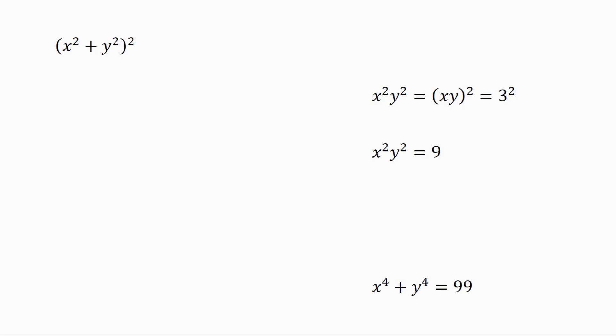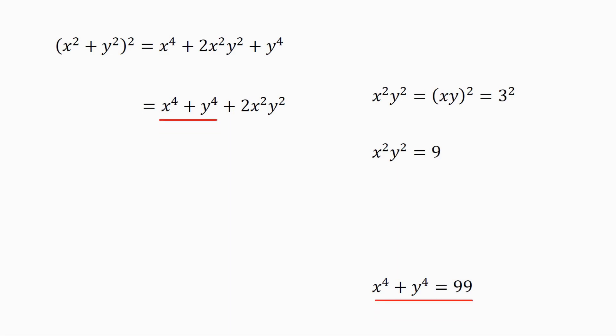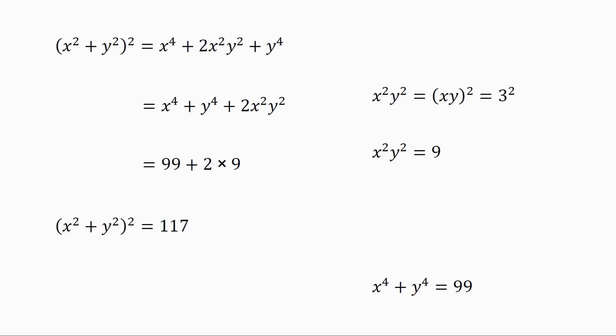In the next step, we square x squared plus y squared. Then we get x squared plus y squared, all squared, equals x to the power of 4 plus 2 times x squared y squared plus y to the power of 4. Rearranging, and plugging in x to the power of 4 plus y to the power of 4 equals 99 and x squared y squared equals 9, we get x squared plus y squared, all squared, equals 99 plus 2 times 9, which equals 117. So x squared plus y squared equals 3 times the square root of 13.